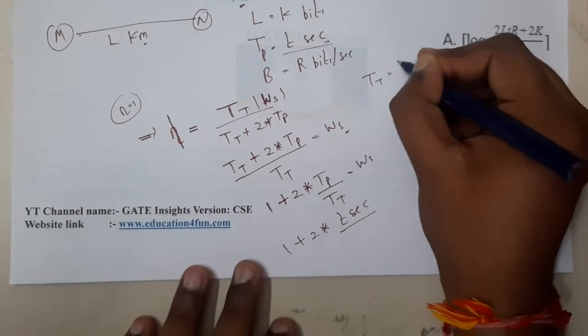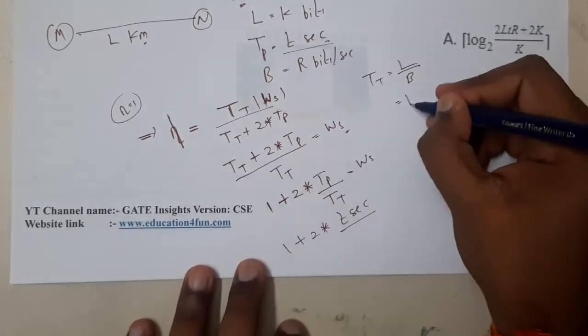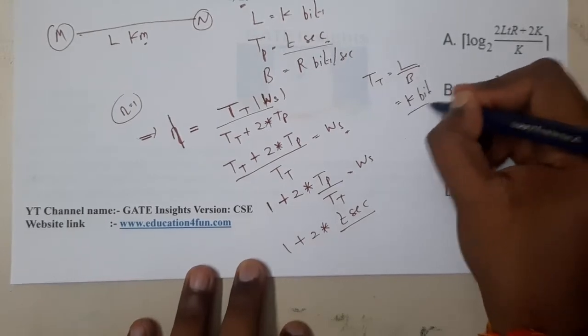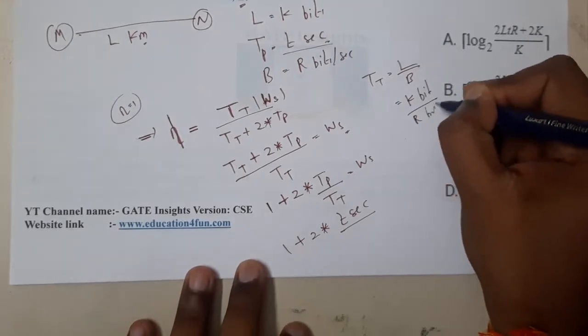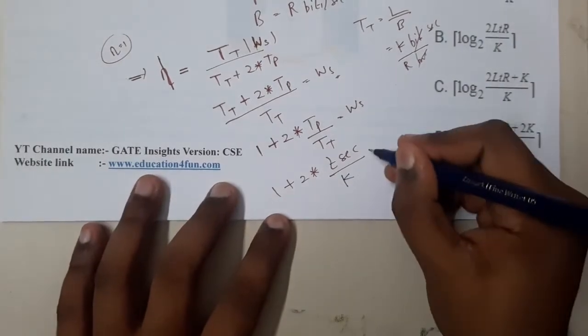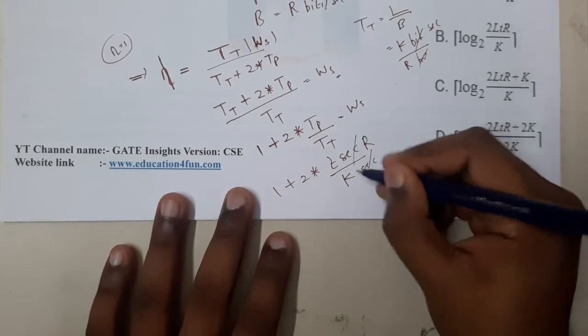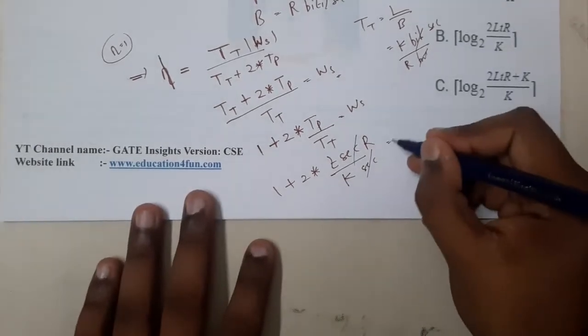So it is 2 times T seconds. What is Tt? Tt is nothing but length by bandwidth. Here they give the length as K bits and bandwidth as R bits. Bits bits will cancel and second in the numerator, so it is K by R seconds. Second second will cancel.